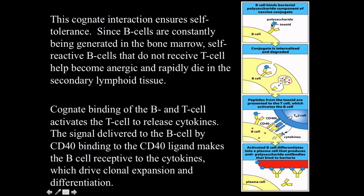The cognate binding of a B cell and T cell activates the T cell to release cytokines. The signal from the B cell delivered via CD40 binding to CD40 ligand makes the B cell receptive to cytokines, which drives clonal expansion — the same pattern we saw with macrophages. Here, the B cell is binding to a bacterial polysaccharide component in the context of a vaccine conjugate. This conjugate is internalized and degraded; peptides from the toxoid are presented to the T cell, which activates the B cell. The activated B cell differentiates into a plasma cell producing anti-polysaccharide antibodies against that bacteria. But that protein component is needed for interaction with the T follicular helper cell, because T cell receptors are all about proteins.